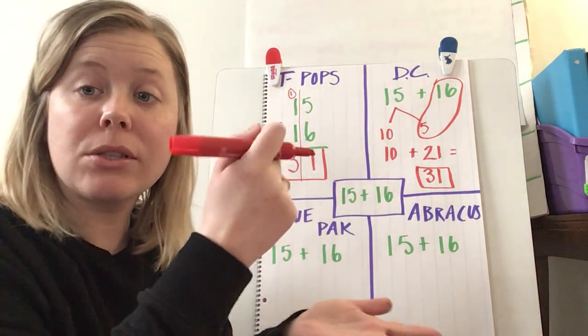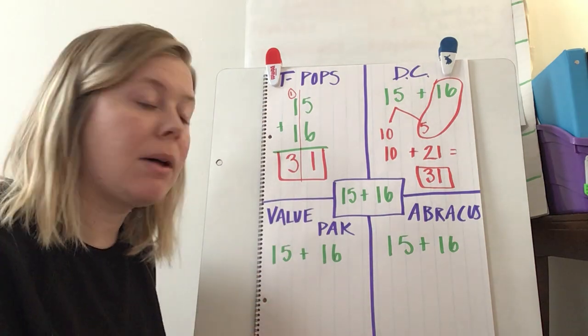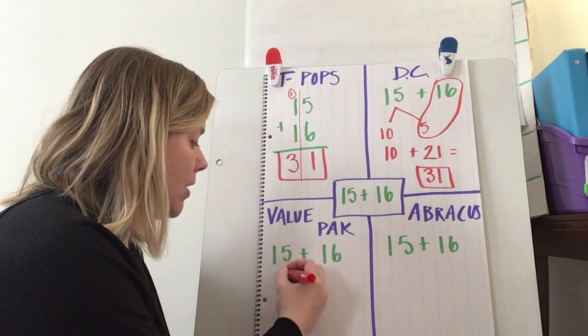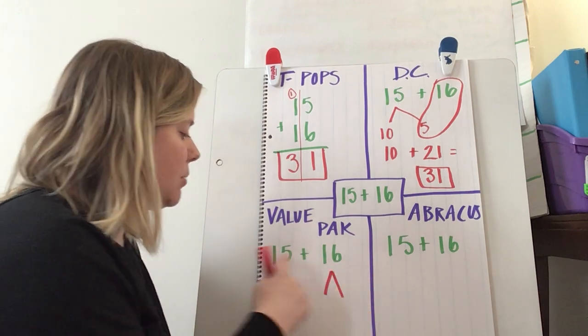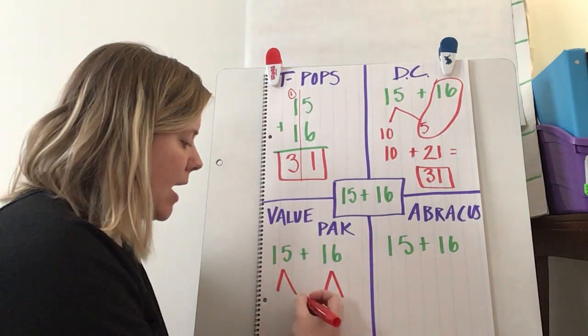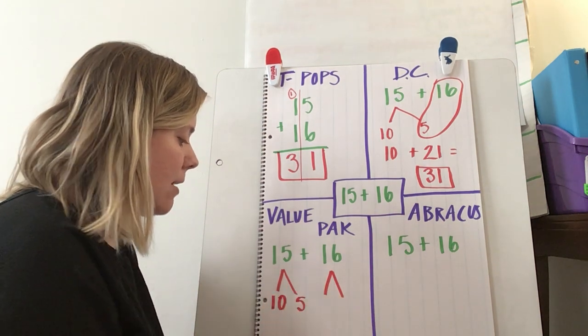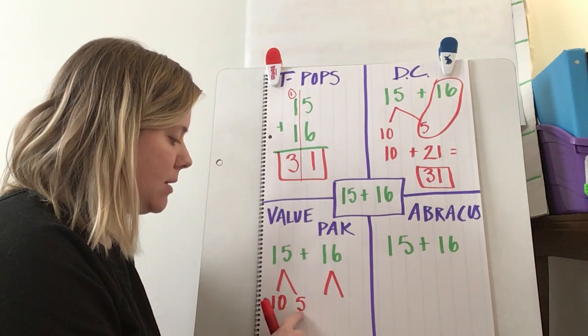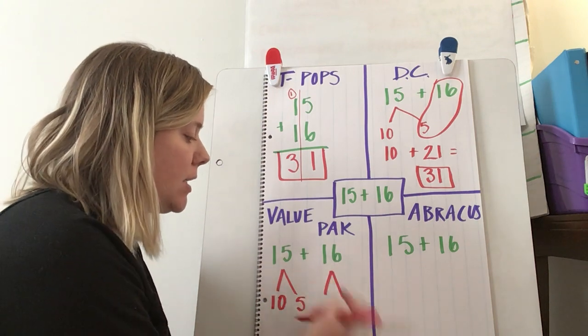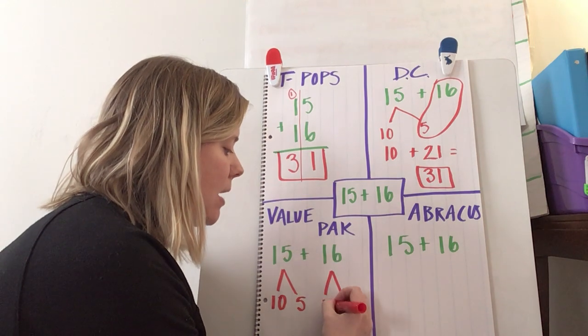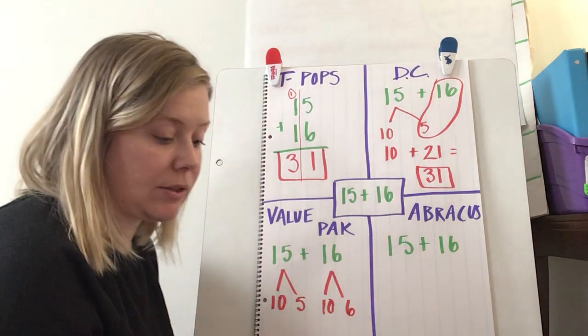Okay, value pack. We also decompose, but we decompose both numbers, and we decompose them into place value. So if I decompose 15, I have 5 ones and 1 ten, right? 10 and 5 is 15. If I decompose 16, I have 6 ones and I have 1 ten. 10 and 6.